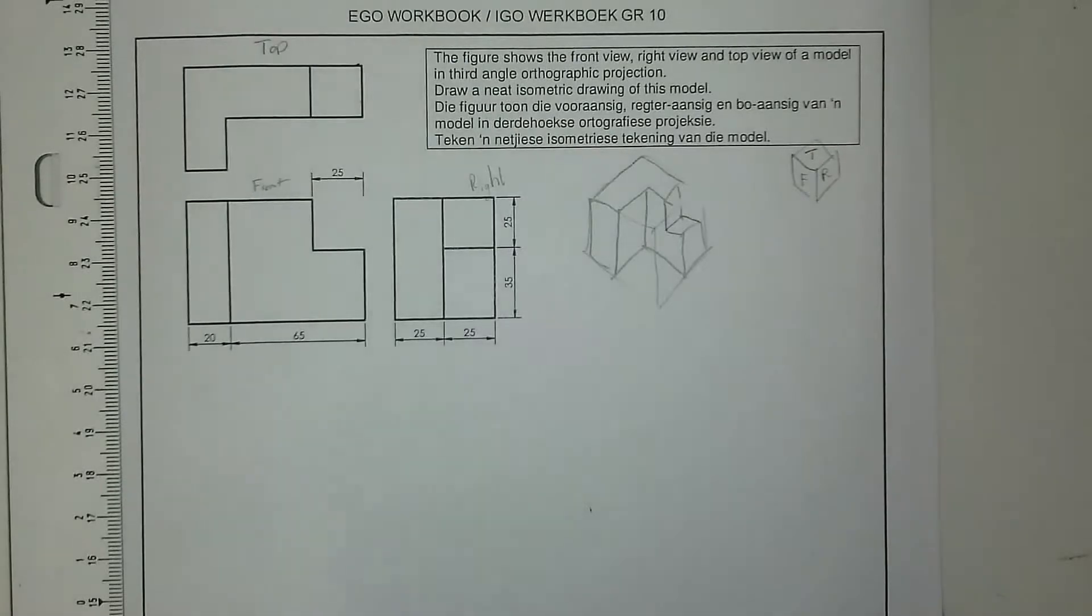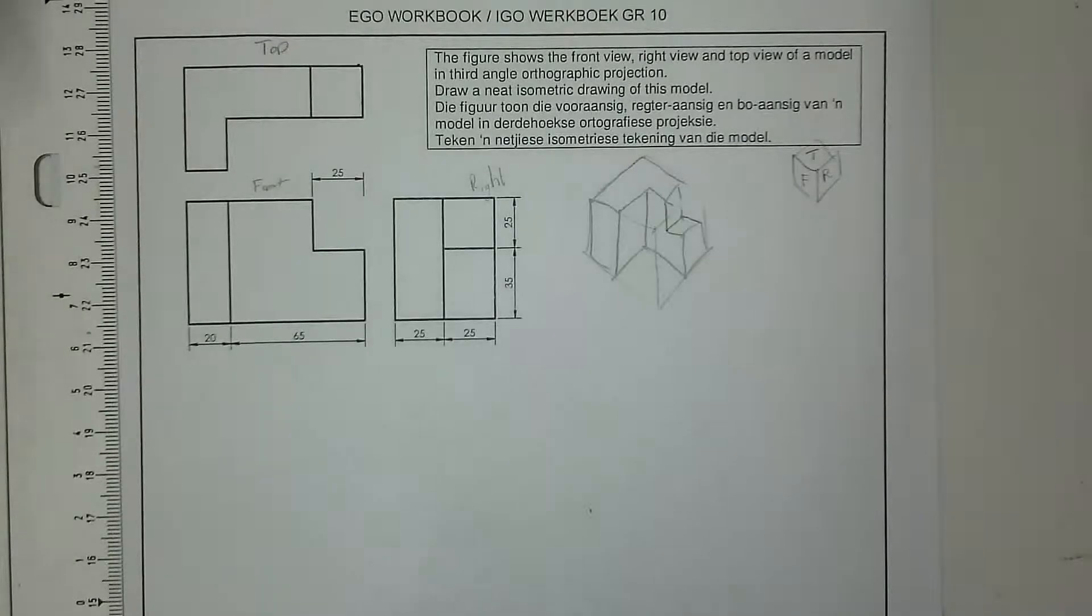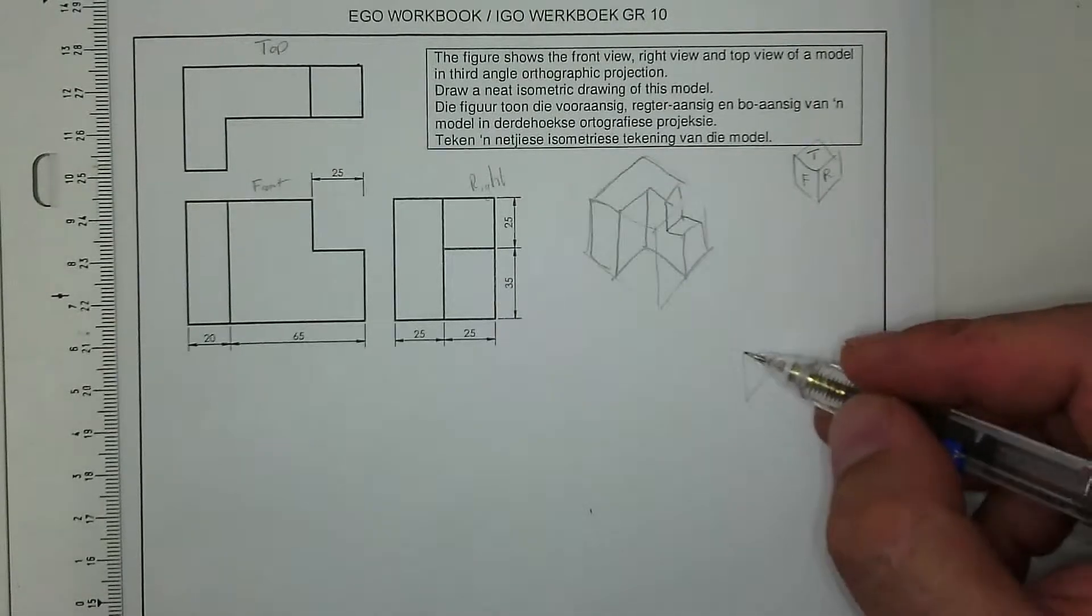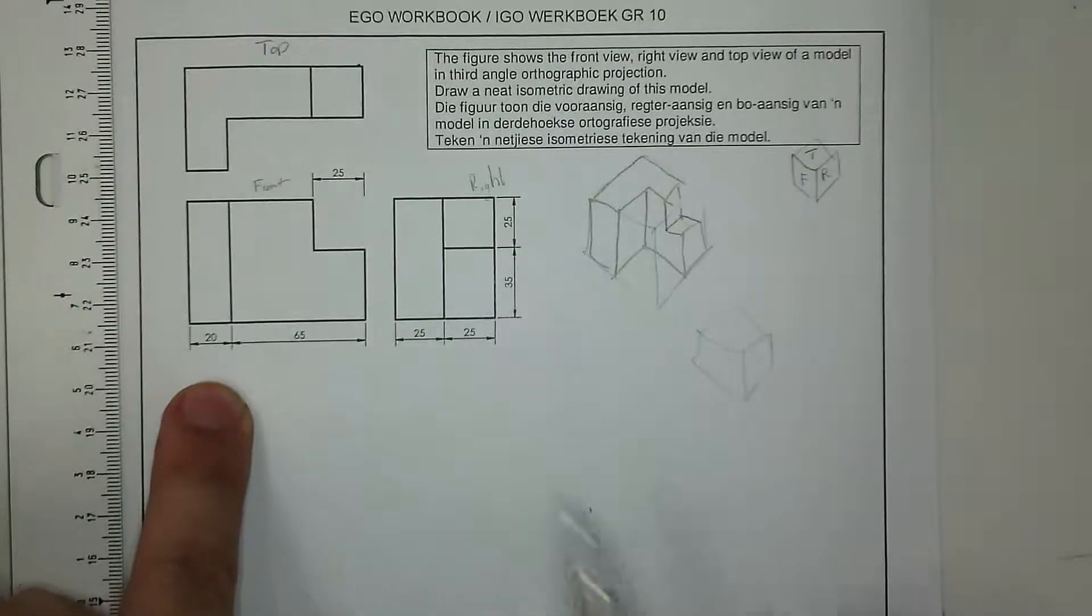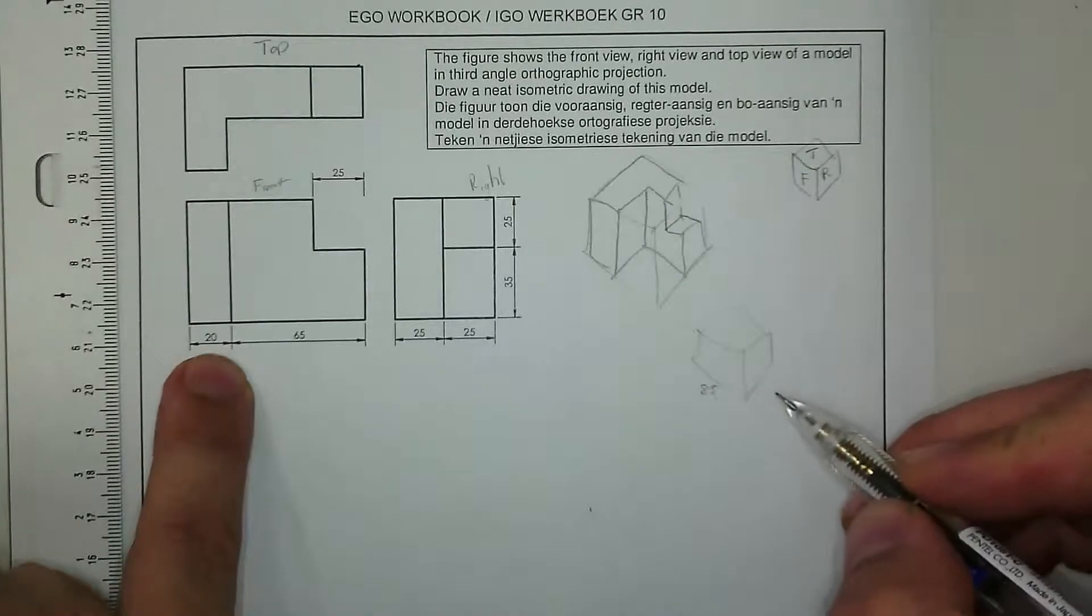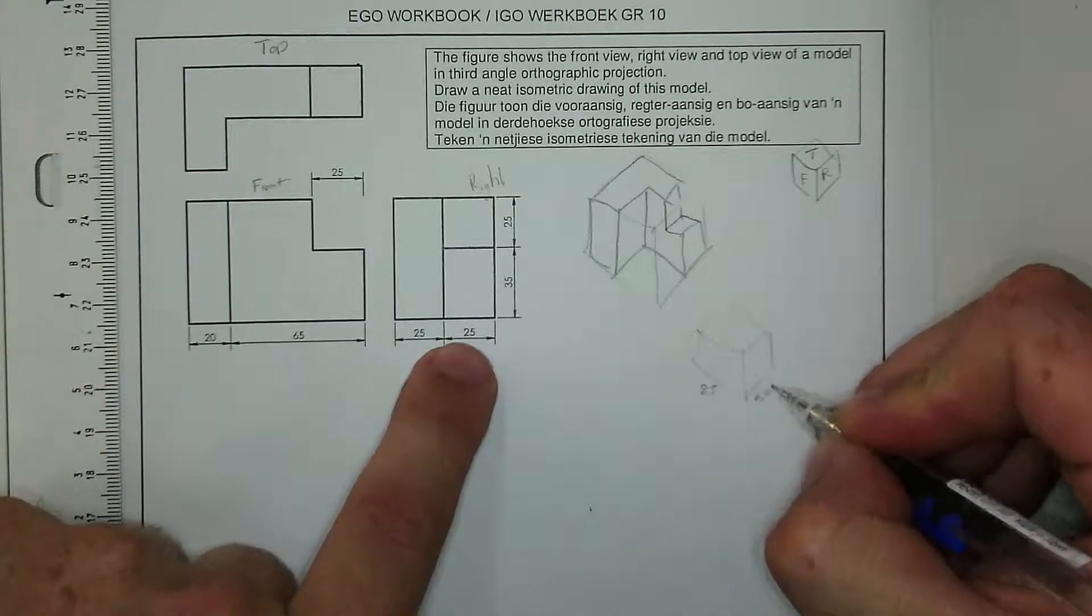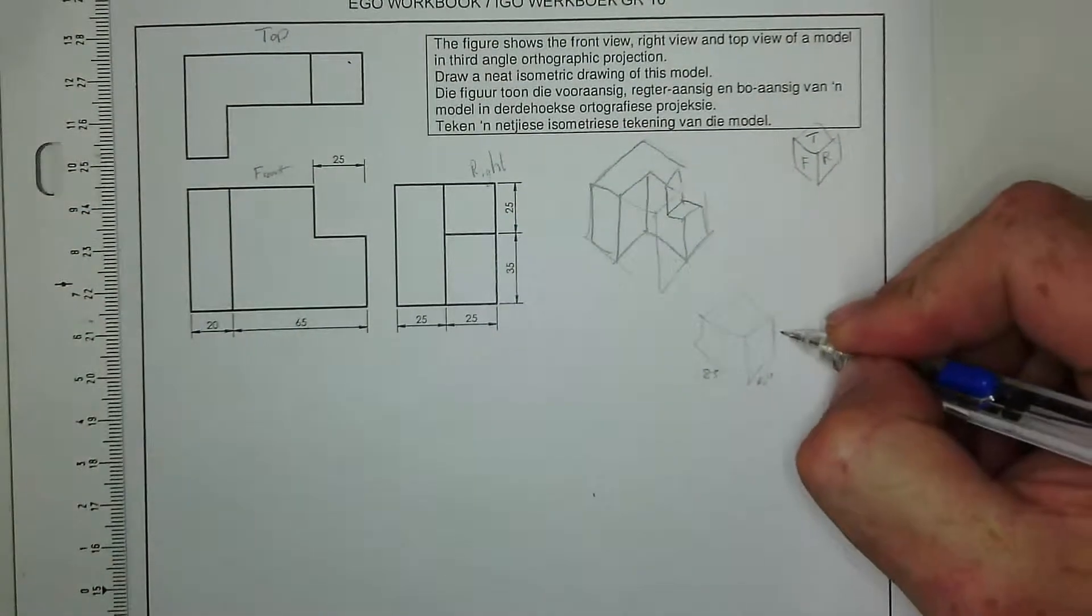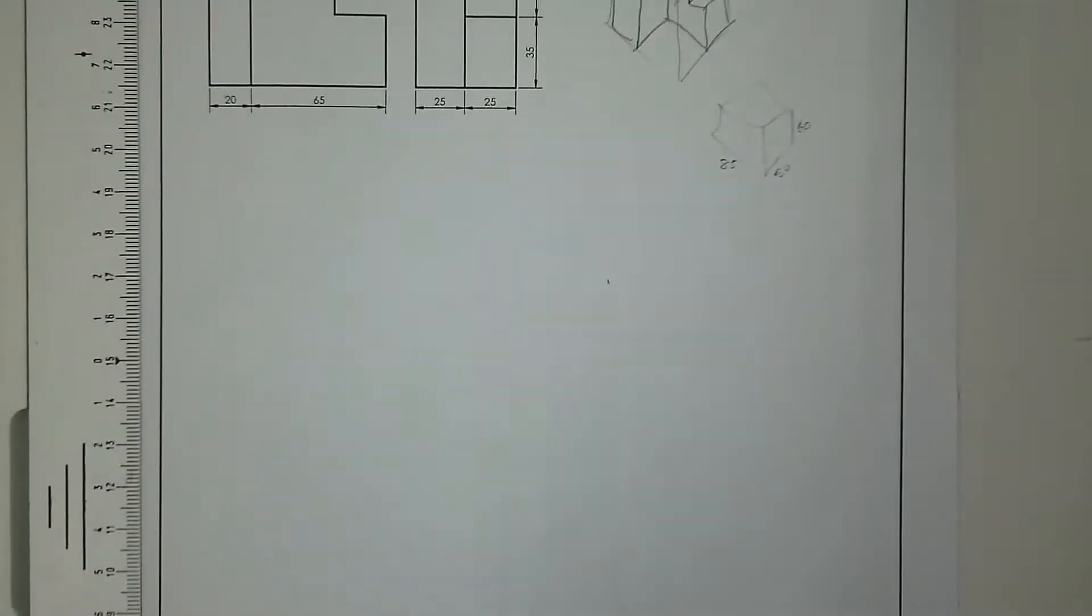Now, I always start my drawings with creating my isometric block first. Isometric block is the space, the total space. It takes up the total width, the total height, and the total depth. Now, if we look at it on our drawing, if we had to create a block, knowing that we know now, my front view is 85 millimeters on the front view. My right view, that's over here, is 25 and 25, it's 50, and my total height is 35 and 25. It gives me a total distance of 60, a height of 60. So now I'm going to create that quickly in isometric space.